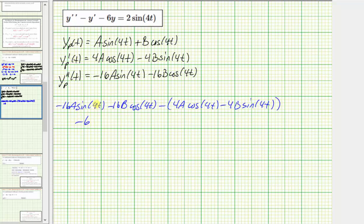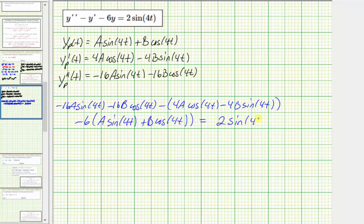Then we have minus six times the original function y, which is A sine four t plus B cosine four t. All of this must equal two sine four t. For the next step, let's clear the parentheses — the first two terms stay the same, and distributing a negative one